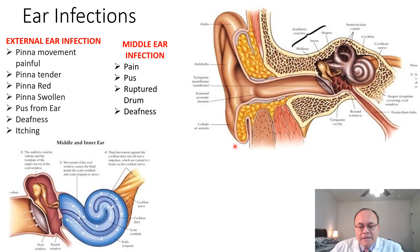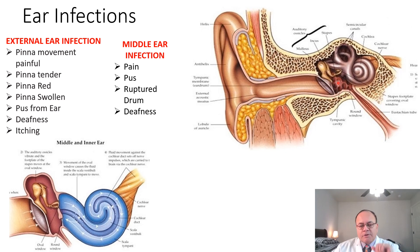Ear infections can be of three types. External ear infection, which extends from the pinna to the eardrum. Middle ear infection, which extends from the eardrum to a little chamber behind, which contains the three tiniest bones of the body, the ossicles. And the inner ear infection, which involves the cochlea, the organ of hearing, and the vestibule, the organ of balance.